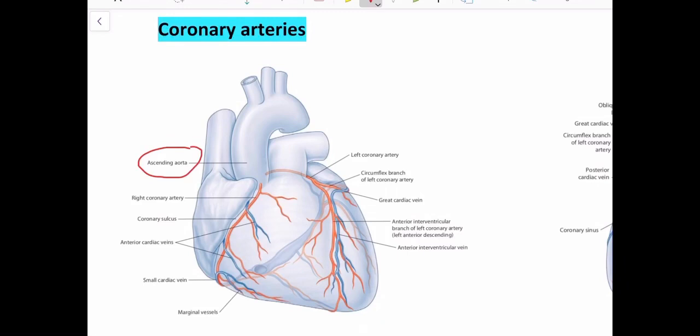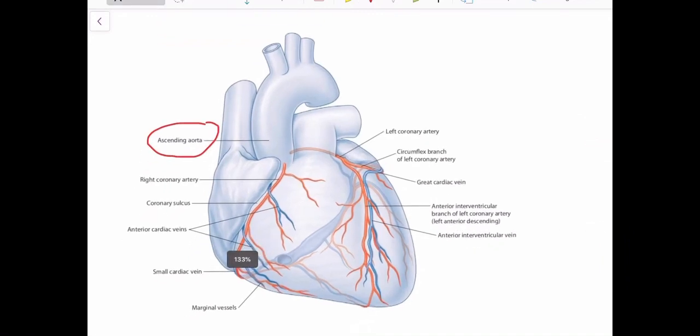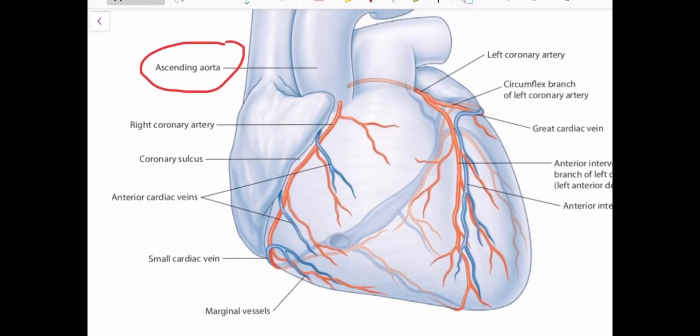When the ascending aorta starts from the left ventricle, it gives rise to these two branches. Let's look at the right coronary artery first. The right coronary artery starts from the right aortic sinus of the ascending aorta, from the anterior or front aspect. Then it descends in between the right atrium and the right ventricle. We call this the coronary sulcus, so it lies in the coronary sulcus. On its pathway, it gives various branches that supply the cardiac muscle.